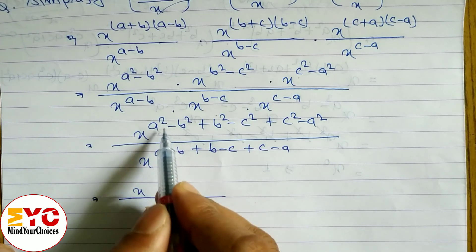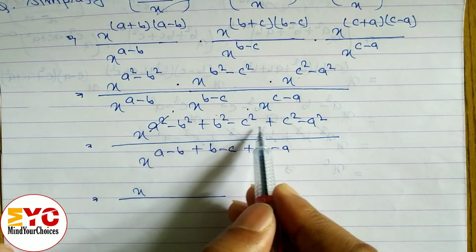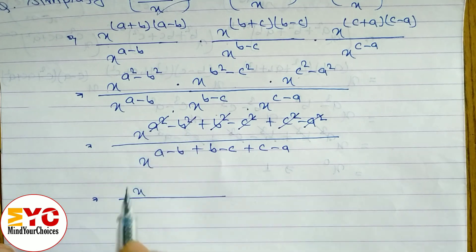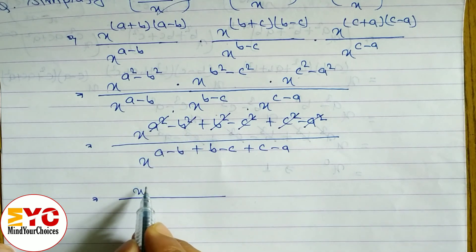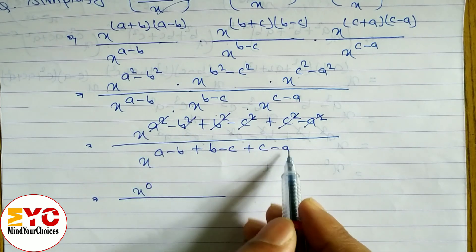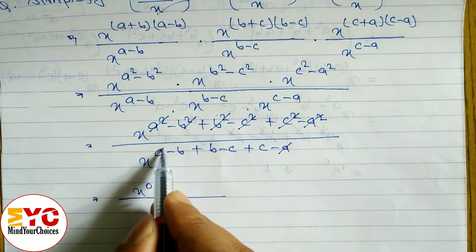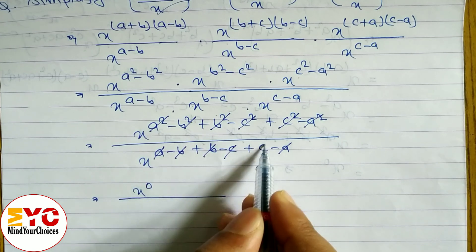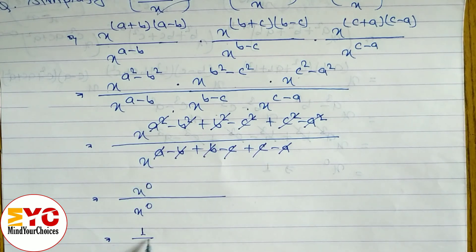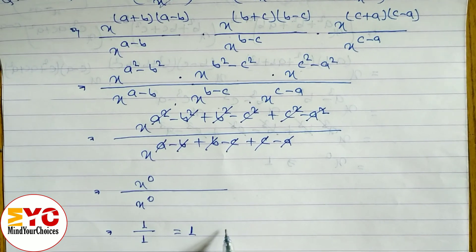In the numerator, x to the power — a² and a² cancel, c² and c² cancel, b² and b² cancel — so we get x to the power 0. In the denominator also, -a and +a cancel, b and b cancel, c and c cancel, leaving x to the power 0. x to the power 0 means 1, and 1 divided by 1 equals 1, which is the answer.